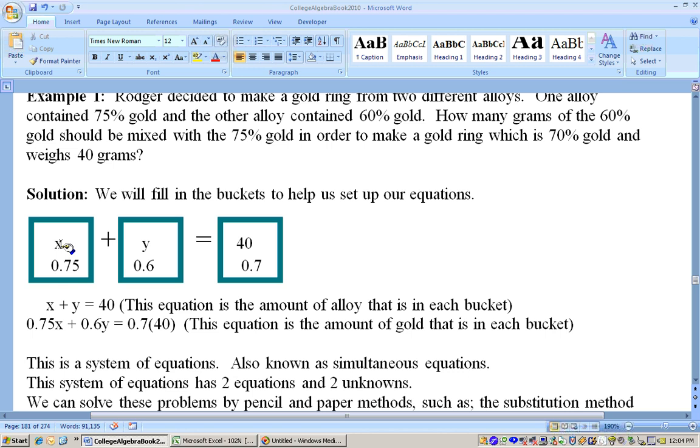The other equation is based on the amount of gold. Like for example, if we had 100 grams of this alloy and 75% of it is gold, then 75 grams of it would be gold because we would take 0.75 times 100. Now we don't know how much of this stuff we have. We call it X. So how much of this stuff is gold? Well, 75% of the X grams or 0.75 times X. By the same idea, 60% of Y is gold or 0.6 times Y is the amount of gold. And over here, how much gold do we have? Not 40 grams of gold, but we have 70% of this 40 grams or 0.7 times 40 is the amount of gold that we want to end up with. Well, that gives us two equations. X plus Y equals 40 and 0.75X plus 0.6Y equals 0.7 times 40, which is 28.